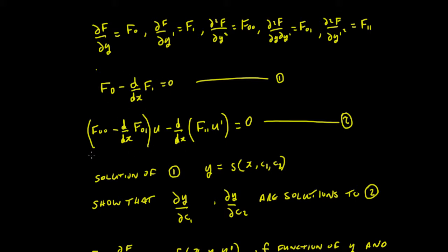Now there is actually a quicker way of doing it. If we know that the solution to the Euler-Lagrange equation always comes in this form — always a function of the independent variable x and two parameters, say C1 and C2 — if you look back at the previous videos you'll see there's about 15 or so examples and you'll be able to put all the answers into this kind of general form.